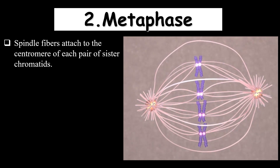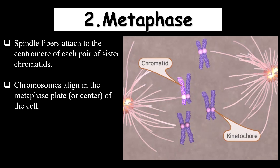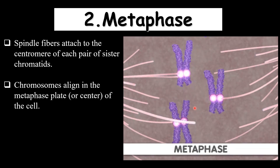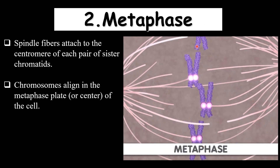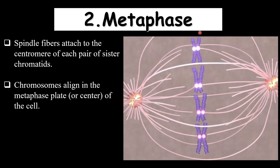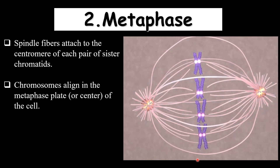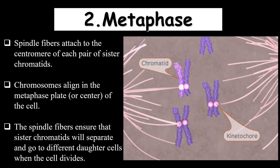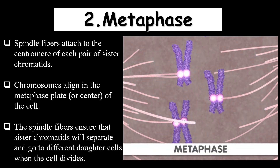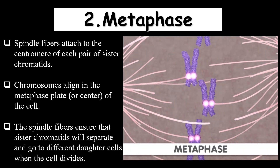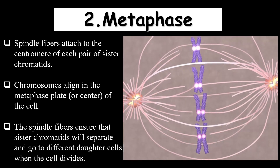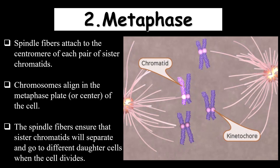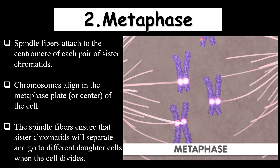Once all the spindle fibers are attached to the kinetochore of the chromosomes, the chromosomes align themselves at the equatorial plate. The chromosomes scattered in the cytoplasm during prophase will align themselves into the center of the cell — this is known as the metaphase plate, also called the equatorial plate. The spindle fibers must ensure attachment from one pole to one chromatid and from the other pole to the other sister chromatid's kinetochore, to ensure equal division of chromosomes toward opposite poles.